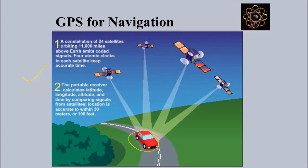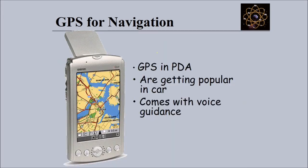GPS for navigation: we have a constellation of 24 satellites about 20,000 kilometers above earth emitting codes. We have four atomic clocks in each satellite which keep very accurate time. You have a portable receiver which calculates the latitude, longitude, altitude, and time by comparing signals from satellites. Location is accurate within 30 to 100 feet.